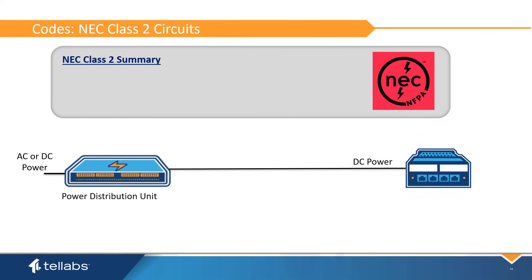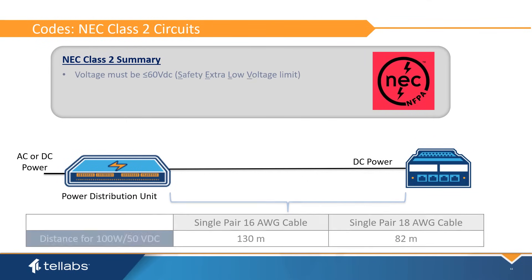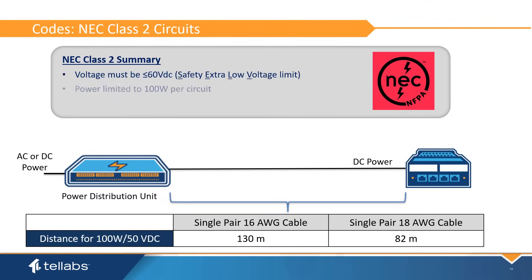To power optical LAN equipment, electrical codes must be considered. Class II power is used on most small form factor ONTs. Class II power is defined as being less than 60 volts DC and power limited to 100 watts, as defined in Article 725 of the NEC. Class II power is beneficial in the optical LAN because it does not require the same fire and safety precautions as Class I power and does not have to be installed by a certified electrician, generating significant savings when deploying optical LAN.